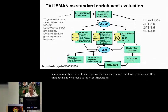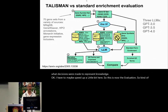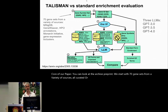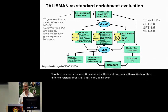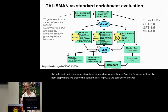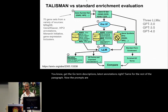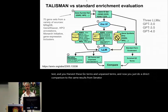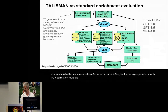This is the evaluation — the core of our paper. We start with 70 gene sets from a variety of sources, all curated or supported with very strong data. We have three different versions of GPT: GPT-3, 3.5, and 4. We take the gene symbols, find their standardized identifiers, create the context data — GO term descriptions, latest annotations, RefSeq paragraphs. Prompts are constructed and submitted to the LLM; we harvest the narrative text and GO terms. We do a direct comparison to standard enrichment results using hypergeometric test with FDR correction, multiple testing correction, and p-value cutoff.